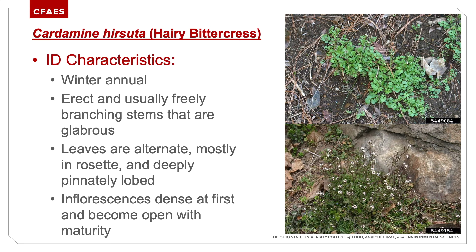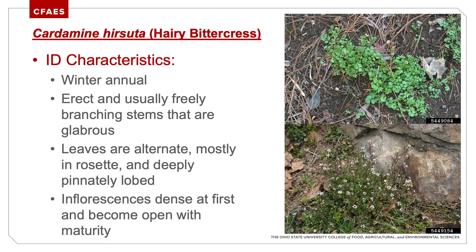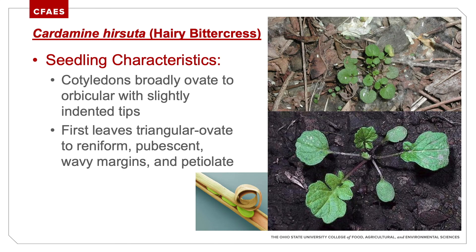Hairy bittercress — winter annual with erect and usually freely branching stems that are glabrous; leaves are alternate, mostly in a rosette, and deeply pinnately lobed. Basal leaves are in a rosette, pinnately lobed with reniform to slightly elliptical terminal division; petioles are stipulate; four white petals flower in the spring. Not typically a huge agronomic weed, but it does appear. Early on when it looks like this, people ask if it's chickweed, and then you look closer and see it's not. Cotyledons are broadly ovate to orbicular with slightly indented tips; first leaves are triangular-ovate to reniform, pubescent, with wavy margins and petiolate.